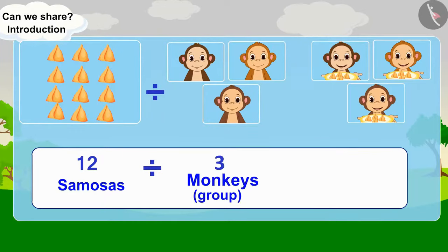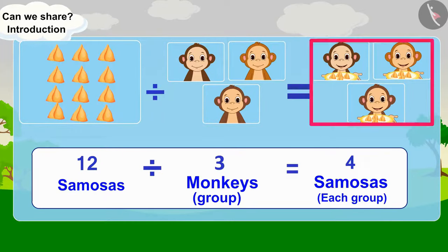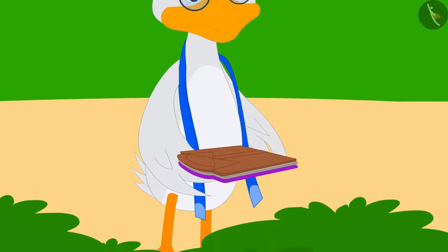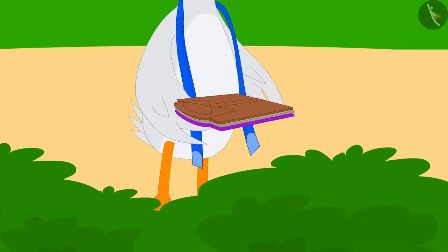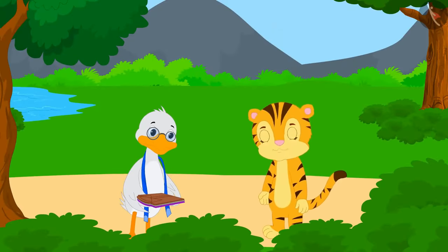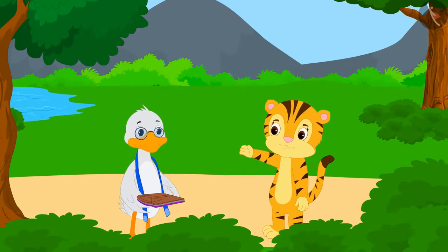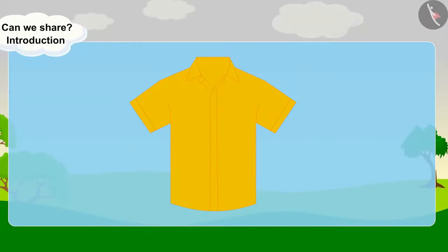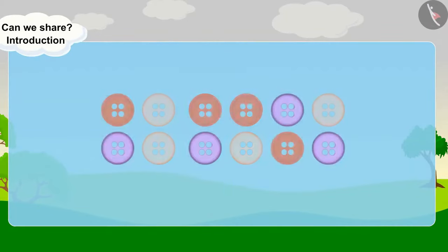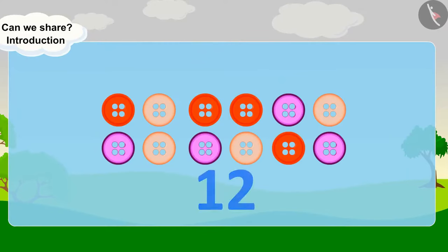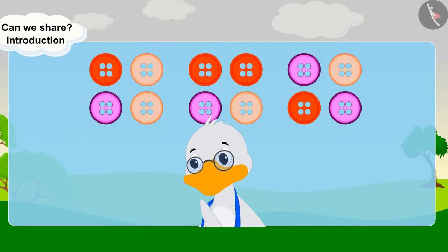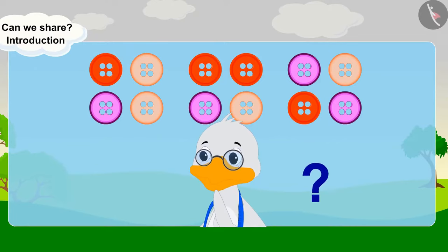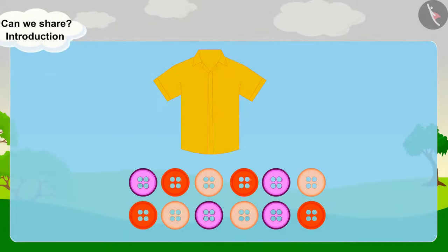What does Badbole tailor have in his hand? Shere Khan's mother asked Badbole tailor to make some shirts for Shere Khan's special friends. The tailor attaches four buttons to each shirt. He has twelve buttons. Let's see how many shirts will he be able to put buttons on.